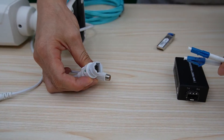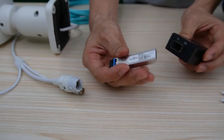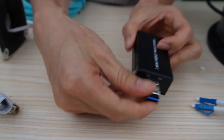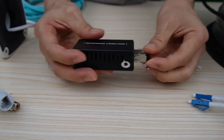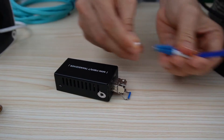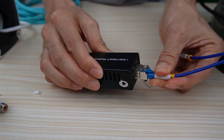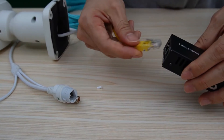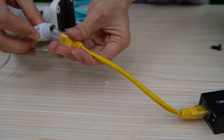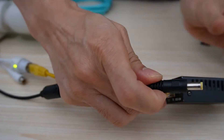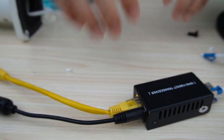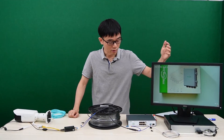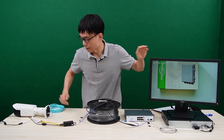We cannot connect the fiber optic cable to the camera directly because the camera only accepts Cat5 or Cat6 Ethernet cable. So we install a media converter, which will convert the fiber optic signal to an electronic signal. We connect the fiber optic cable straight from the switch, then use a short patch cord to link the media converter to the camera. Let's power up the media converter — the system is ready. It will take a moment before we see the camera on the monitor. It's live now. It's quite easy.